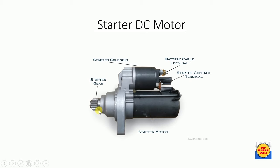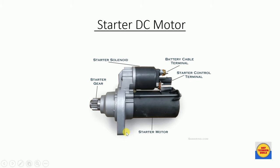Next is the DC starter motor. This motor helps to start the diesel engine and is operated through the DG batteries. When the DG is started and attains approximately 90% RPM, the starter DC motor automatically stops.